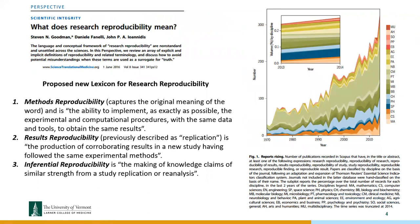A paper called 'What Does Research Reproducibility Mean?' by Steve Goodman and John Ioannidis — a group who has been thinking deeply about the problem of reproducibility in science — proposed a new lexicon. They broke it down into three types. First, methods reproducibility: the ability to implement as exactly as possible the experimental and computational procedures with the same data and tools to obtain the same results.